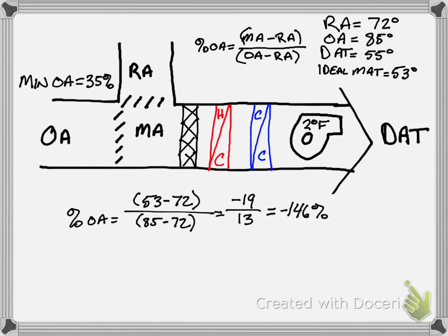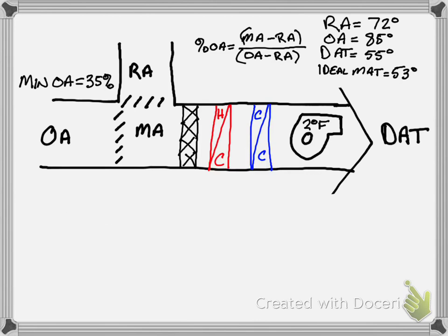And so what we have to do is we have to solve to see what our mixed air temperature is actually going to be. In this scenario we are using the same equation, but we're doing it in a different way. Now we know that our outside air percentage is 35%, because it is our minimum. And we do not know our mixed air temperature, so we'll represent that as X.